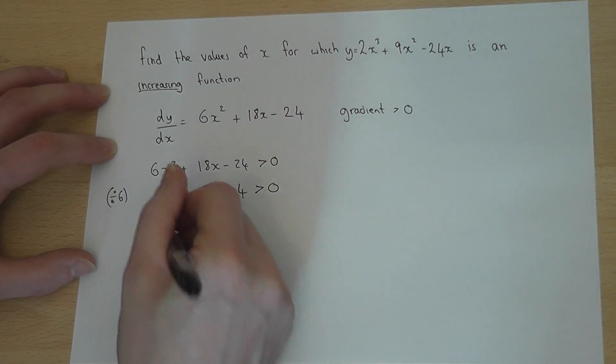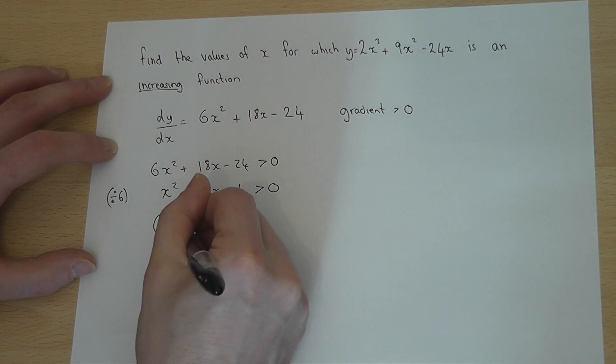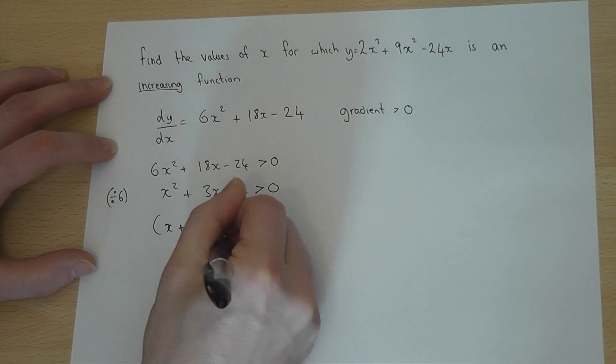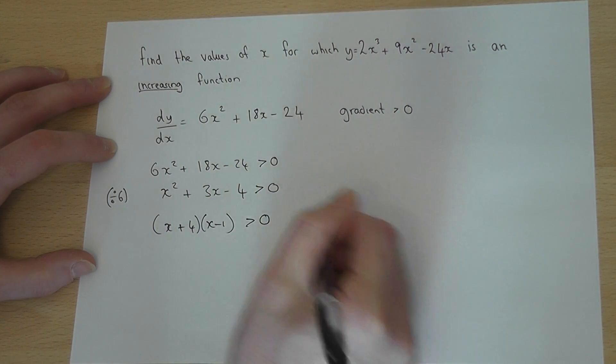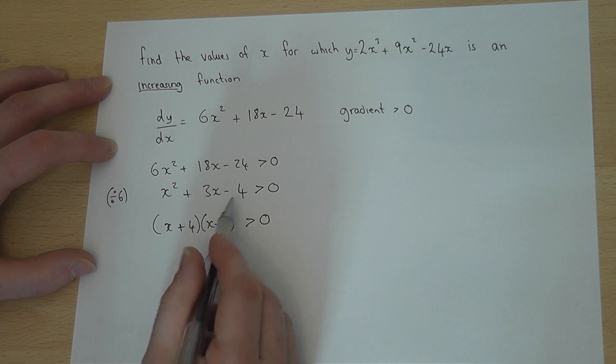This then will factorize to (x plus 4)(x minus 1) bigger than zero. 4 times minus 1 is minus 4, 4 minus 1 is 3.